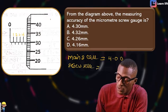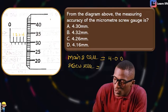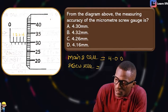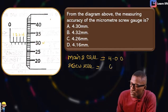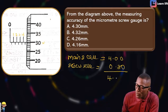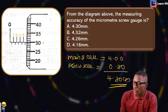On the screw scale — they meet at the 30th division. So the screw scale reading is 0.30. That gives a total of 4.00 + 0.30 = 4.30 mm, which is option B.